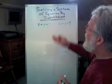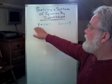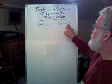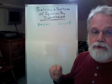Here we have our equations: x plus y equals 11 and 3x minus y equals 5. These are both in standard form.